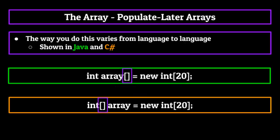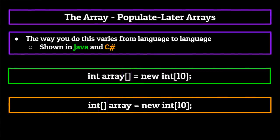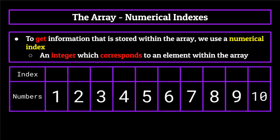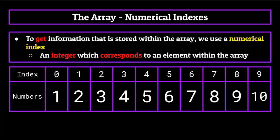You may also be wondering what the brackets mean when instantiating an array — that's just a way to signify to the computer that we are trying to create an array and not just a variable. Now that we know the two different ways to instantiate an array, we need to know how we as the programmer actually get information stored within the array so that we're able to use it. And the simplest way to answer that question is through the means of a numerical index. An index is simply an integer which corresponds to an element within the array. The most important thing to know about indexes is that for a certain array, they begin at zero instead of one. So if we have an array of 10 elements, the first index would actually be index zero, the second would be index one, and so on all the way up to the ninth index.